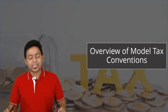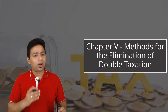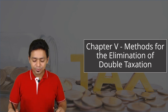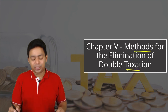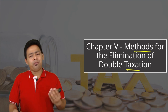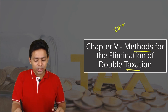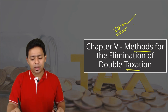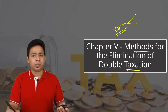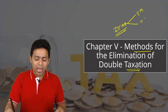Overview of model tax conventions: major taxation items are already discussed. Now we need to discuss methods for elimination of double taxation. We have already discussed what is double taxation avoidance agreement (DTAA) and its methods. There are two famous methods of DTAA — the exemption method and the tax credit method.